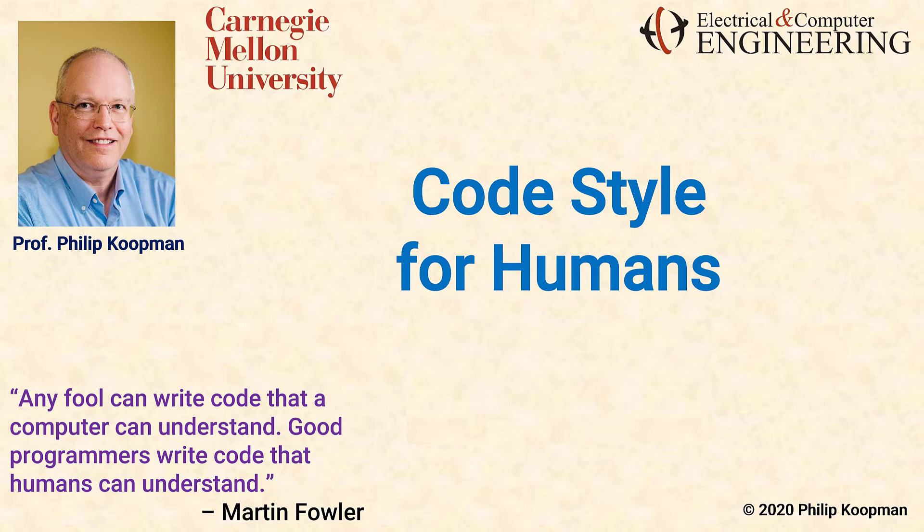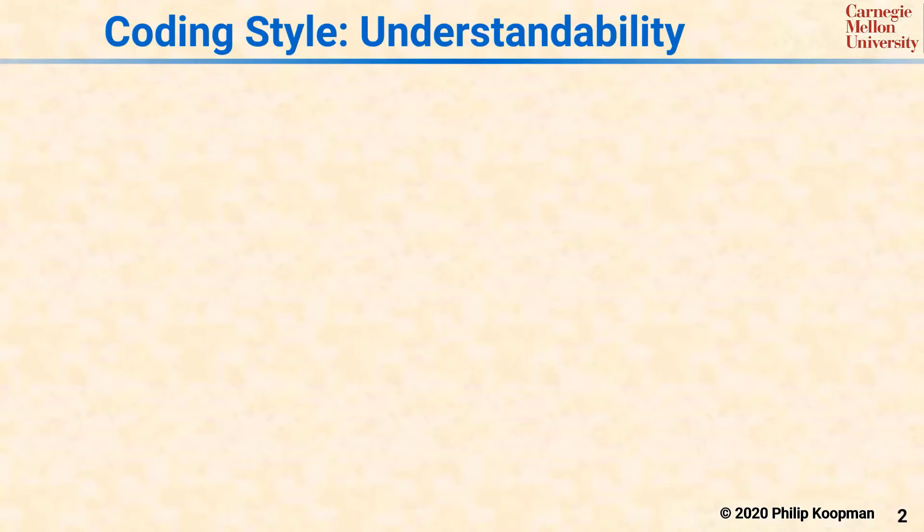This is Phil Koteman with a tutorial on making your code more readable. Two important aspects of coding style are human understandability and safe programming language use. In this tutorial, we'll cover the human understandability side of things.